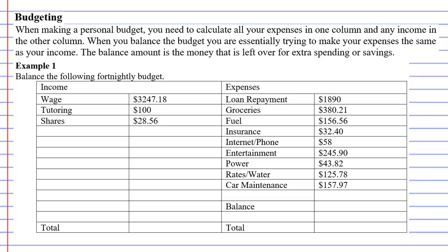Now we're going to learn how to balance a budget. When you balance a budget, you're essentially trying to make sure that your expenses are the same as your income, which means our two totals should end up the same. To do that, you add what's called a balance line under your expenses, and whatever money is in your balance is basically money left over for extra spending or savings.